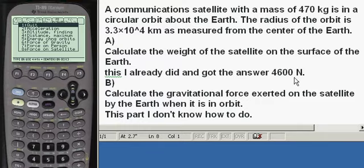The first part, Part A, is of course the force of gravity is mg, which is mass times gravity, and gravity on Earth is 9.81 meters per second squared, and you'd multiply 470 times that, 9.81, and you'll get up to close to 4,600 newtons.